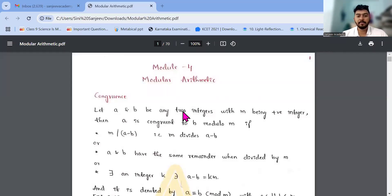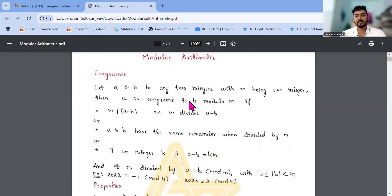So dear students, today we will be discussing Modular Arithmetic. So first one, congruence. Let a and b be any two integers, with m being the positive integer, and then a is congruent to b